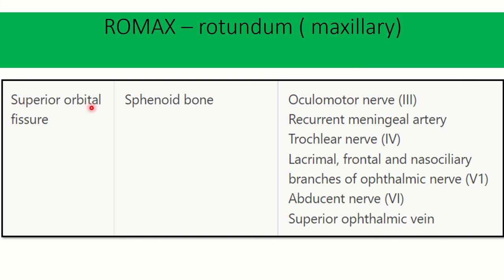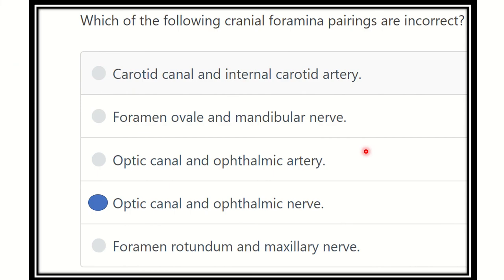The superior orbital fissure lies in the cranial cavity in the sphenoid bone. Through the superior orbital fissure, several structures pass: the oculomotor nerve (3rd cranial nerve), the trochlear nerve (4th cranial nerve), the ophthalmic branch of the trigeminal nerve (V1), and the abducens nerve (6th cranial nerve) — so cranial nerves 3, 4, 5(V1), and 6. Additionally, the recurrent meningeal artery, lacrimal, frontal, and nasociliary nerves — branches of the ophthalmic nerve — and the superior ophthalmic vein pass through the superior orbital fissure.